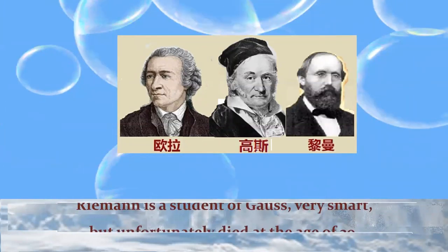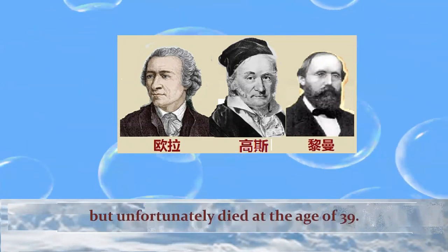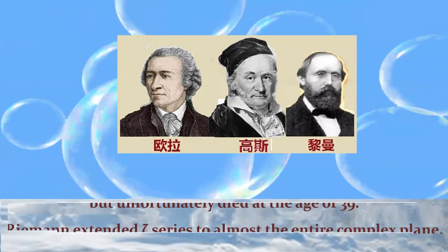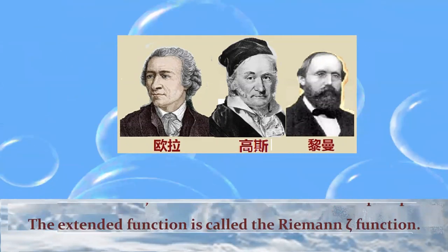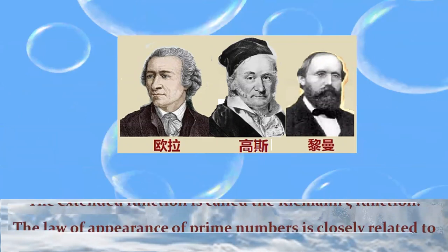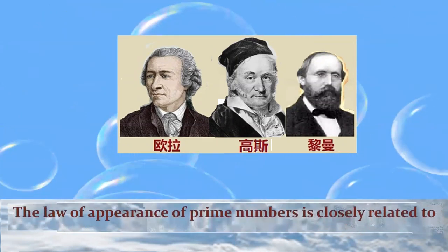Riemann extended the zeta series to almost the entire complex plane. The extended function is called the Riemann zeta function. The law of appearance of prime numbers is closely related to the zero-point distribution of the Riemann zeta function.